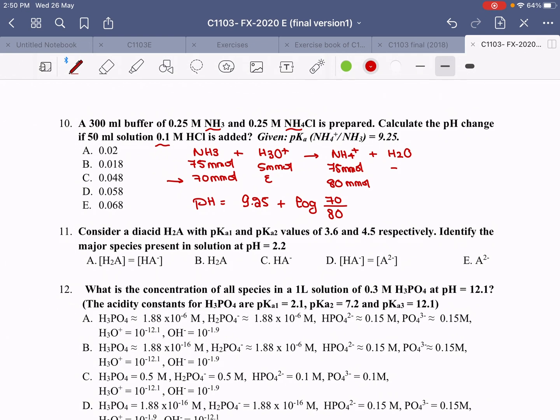In this situation, I'm going to save 70 divided by 80, log the answer, plus 9.25.